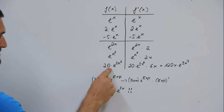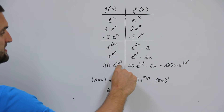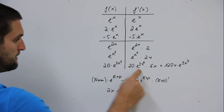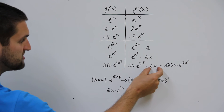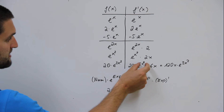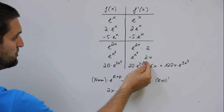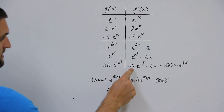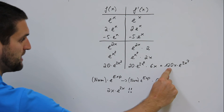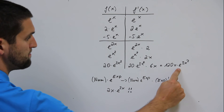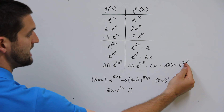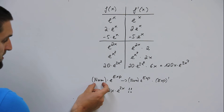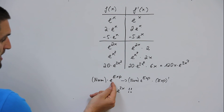Let's try it: 20 times e to the power 3 times x squared. Write down just the same, then multiply by the first derivative of the exponent. The first derivative of 3 times x squared is 6x. So 20 times 6 is 120, giving us 120x times e to the power 3x squared. Very easy.